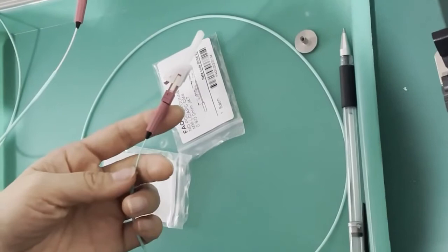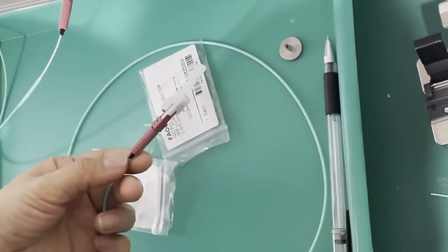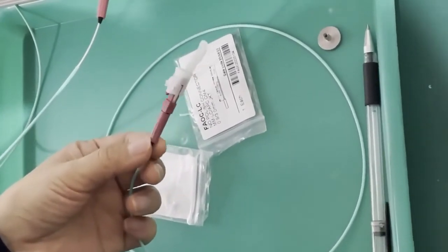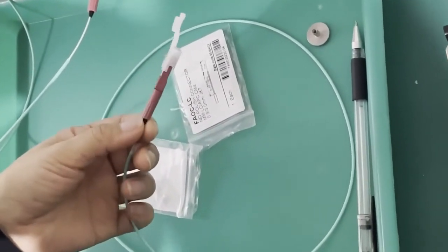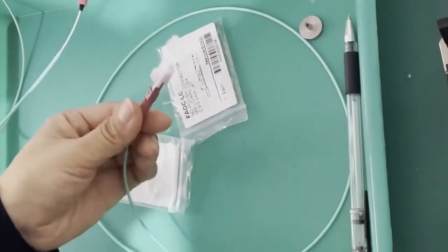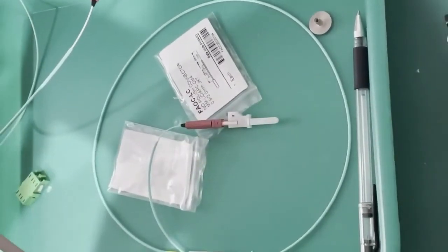If you use 2mm cable, then you don't need this black small boot, just use this 3mm boot. Also for FTDH drop cable, no need for this black boot. Now we finished the assembling. This is the finished product.